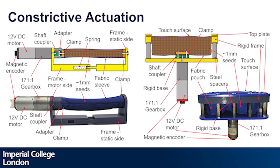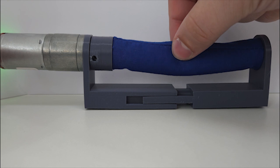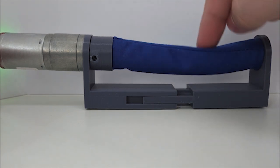In the constrictive actuation approach, the pouch is twisted by a motor from one end in order to tighten the material around the fluid, compressing it from all sides.